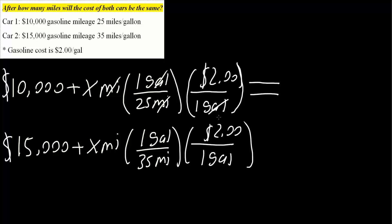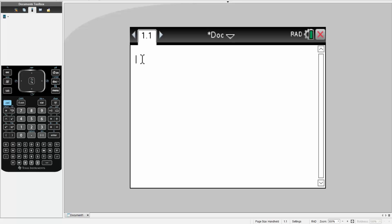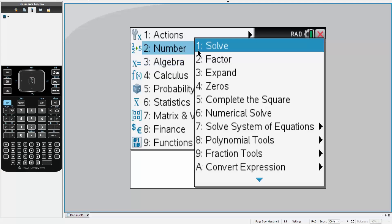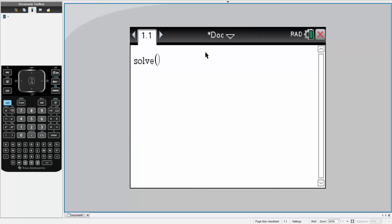Using the information we wrote down, I will hit Menu, Algebra, Solve, and write down what we had. Car 1 was $10,000 plus x miles times...